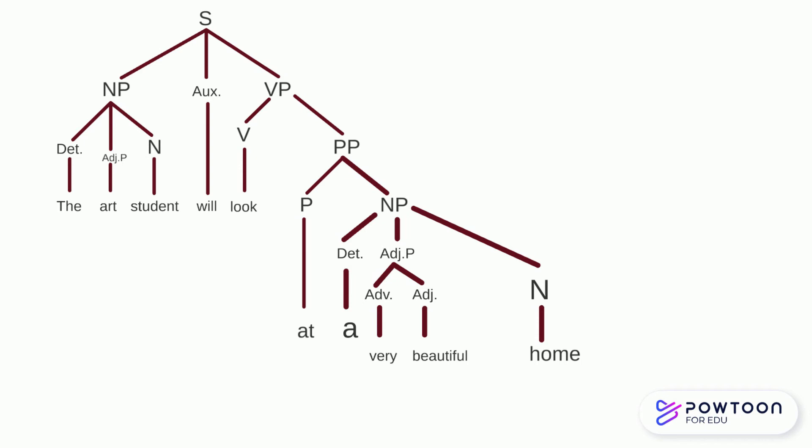Then, we have what is called an auxiliary verb. This verb doesn't have a full semantic meaning. It is simply telling us something about the timeframe of the action. In this case, the action will occur sometime in the future. The auxiliary is attached directly to S.